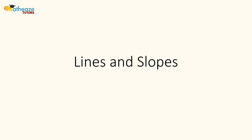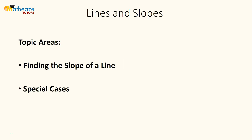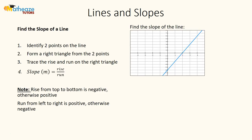In this lesson we're going to look at lines and slopes — how to find the slope of a line and some special cases. So we want to find the slope of a line. Here are the steps we're going to follow: we're going to identify two points on the line and form a right triangle from those two points.